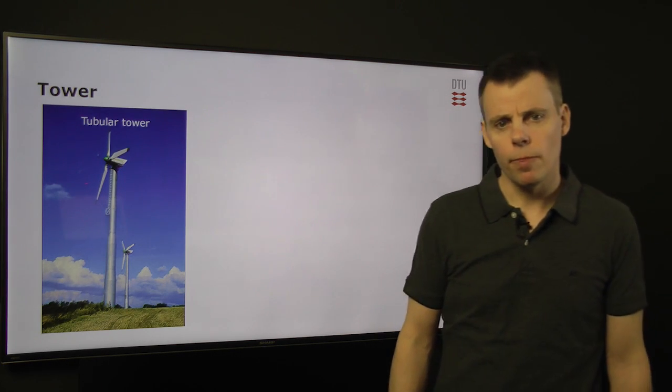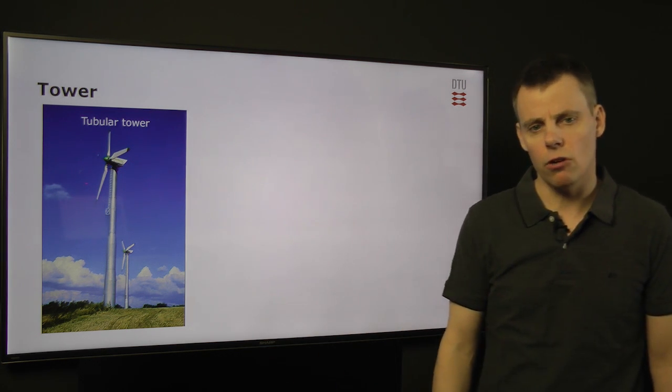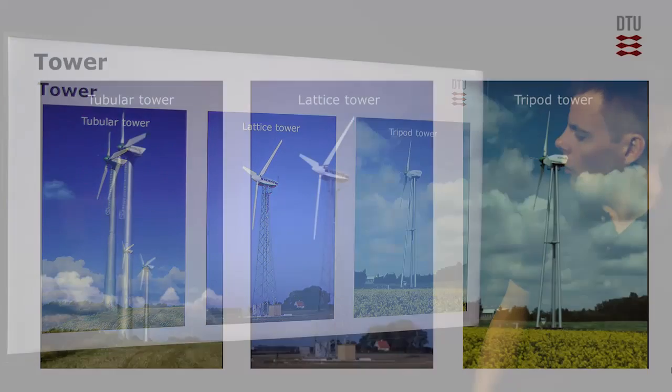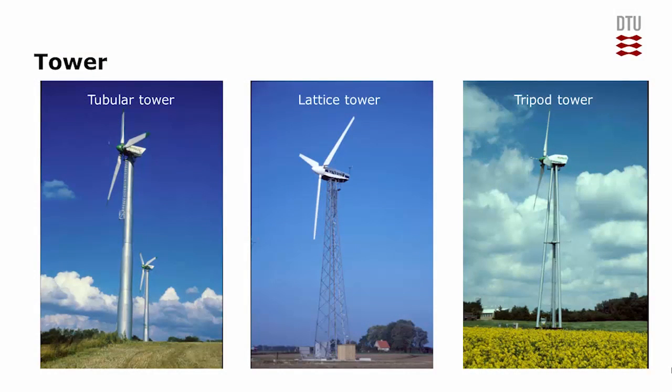The tower, the typical tower you see is a tubular tower made of steel. But it could also be a lattice tower, or even a combination like a tripod tower, where you have larger structures than you have in the lattice tower.